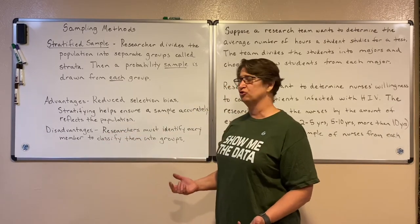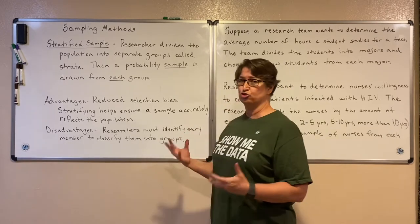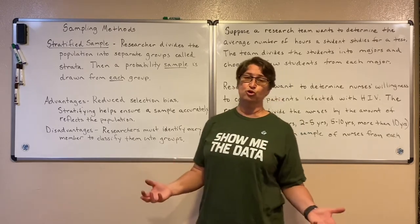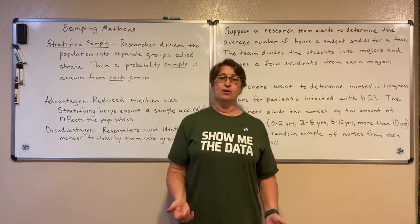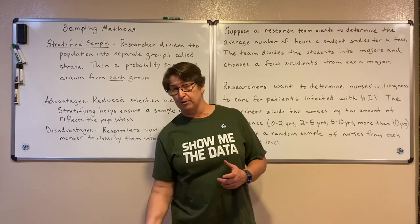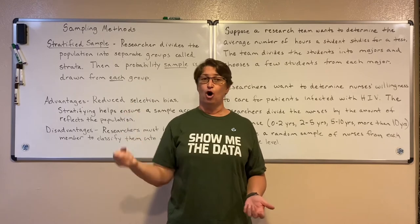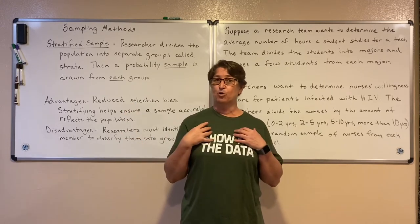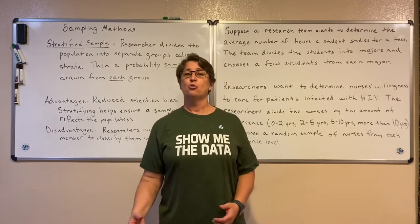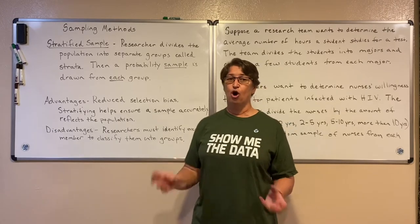The disadvantage of a stratified method is that the researchers must identify every member in the population to classify them into groups. If you're looking at the dirt layers and don't realize there's a layer below that you've missed, you may not grab dirt from all layers. Or if you're looking at people, you might miss an entire ethnic group of your population. So one difficulty with the stratified sample is making sure you've included all the groups.